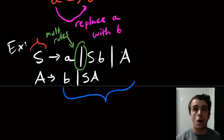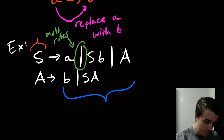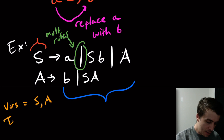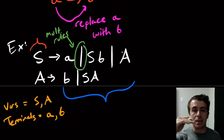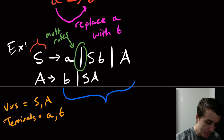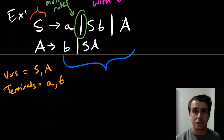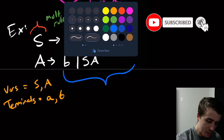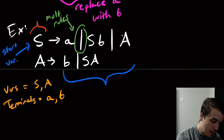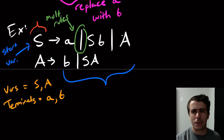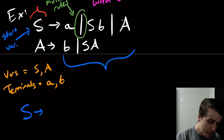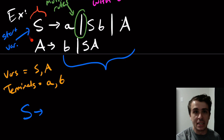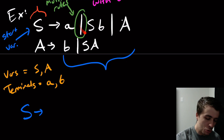Let's start creating strings. We need to know what the terminals and variables are. The variables here are S and A; the terminals are the lowercase characters — lowercase a and lowercase b. Typically variables are capitalized and terminals are lowercase, but you have to specify this formally. I also need to specify the start variable — let's say S is the start variable. That's typical but it could be any variable.